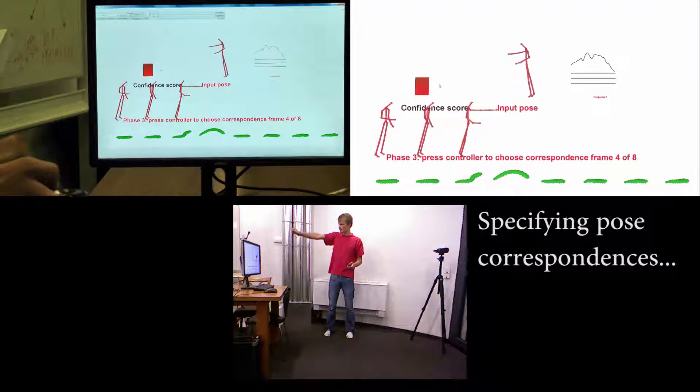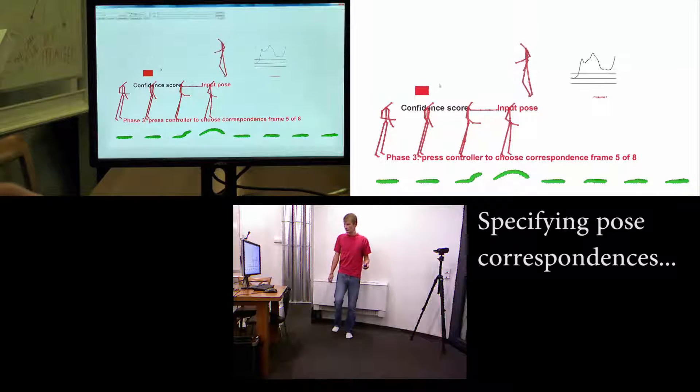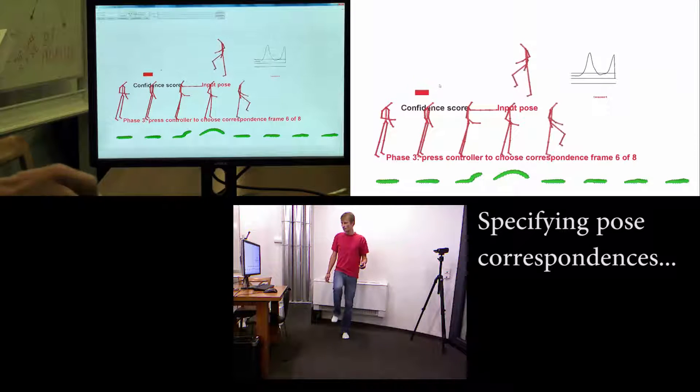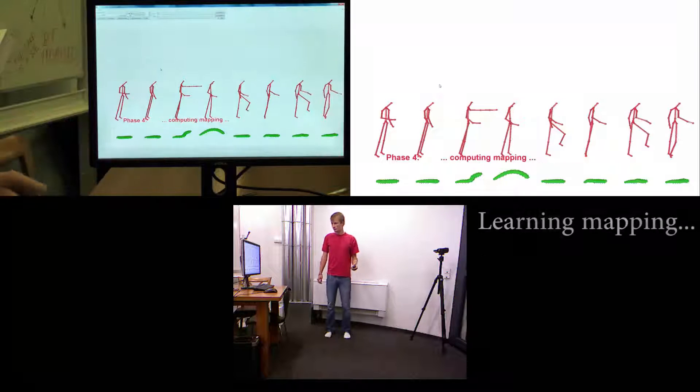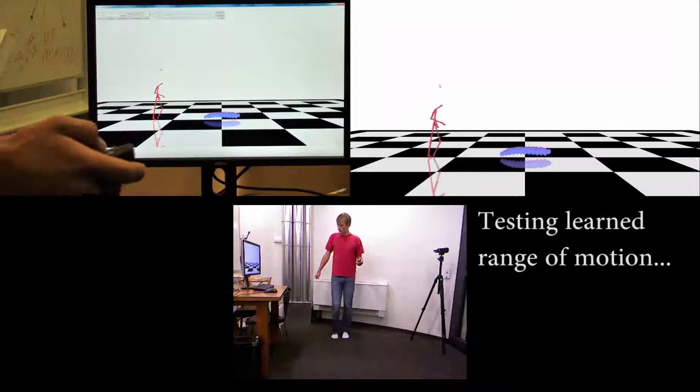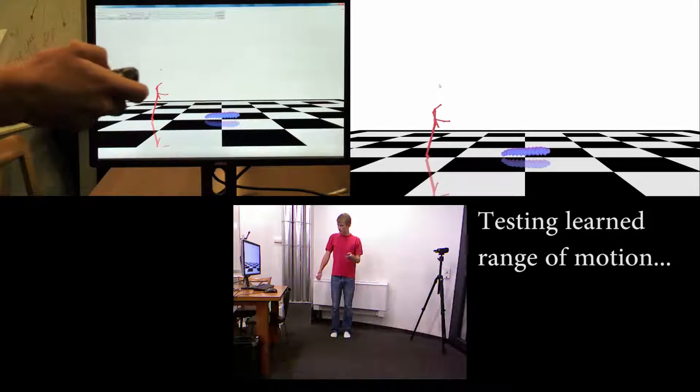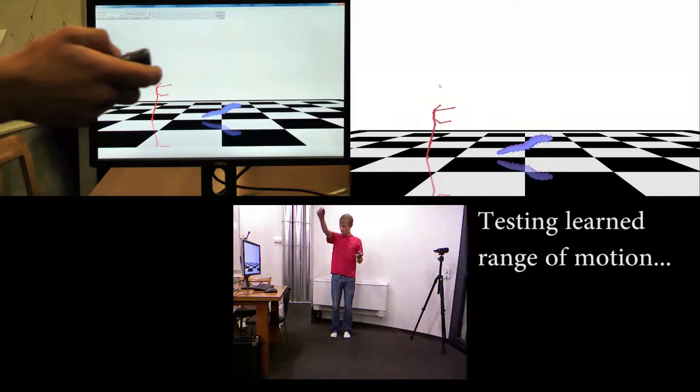Next, we learn a mapping between the source and a target latent volume using both labelled and unlabelled data. The unlabelled data serves to bound the range of admissible poses and reduces unwanted deformations. Learning is almost instantaneous, which allows the puppeteer freedom to change or alter control schemes very rapidly.